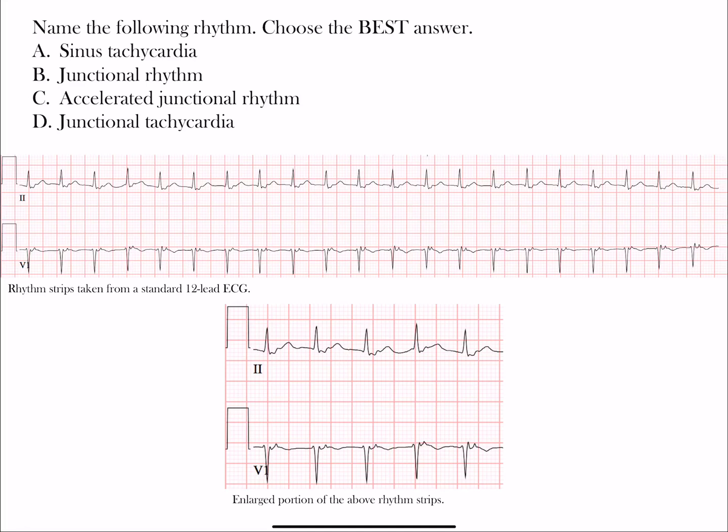Welcome back to the next rhythm challenge. Today we have four choices. We have our rhythm strips with lead 2 and V1 present from a standard 12-lead. Lead 2 is an inferior limb lead at positive 60 degrees, and V1 is our right precordial lead.